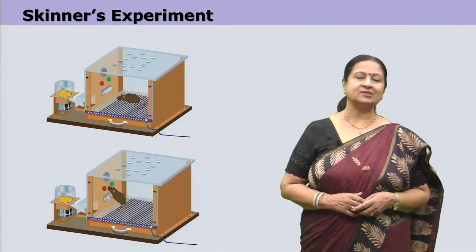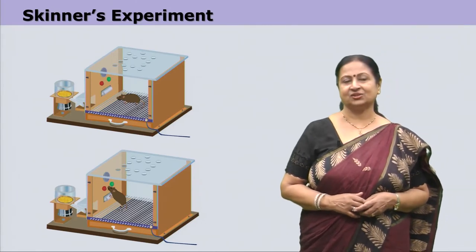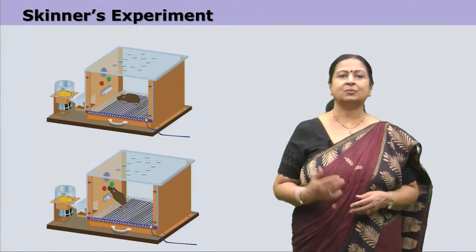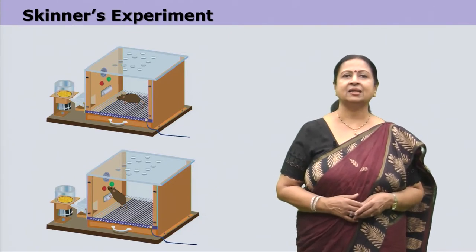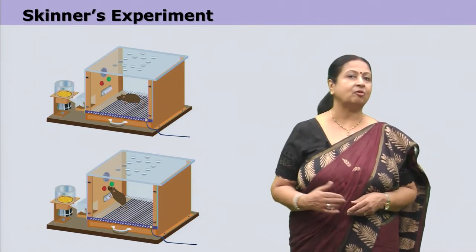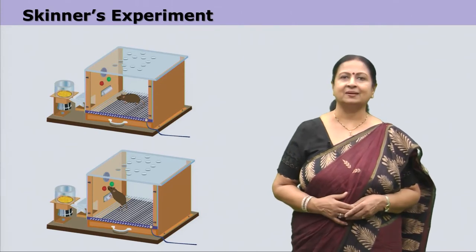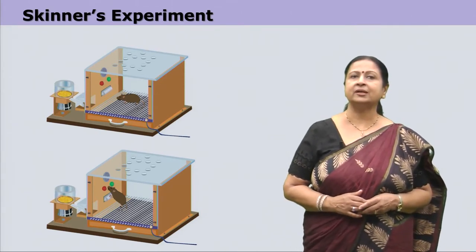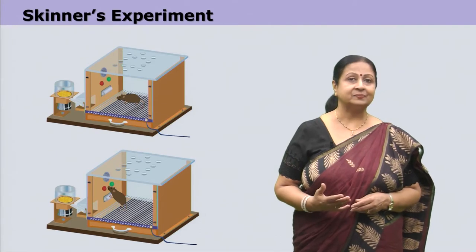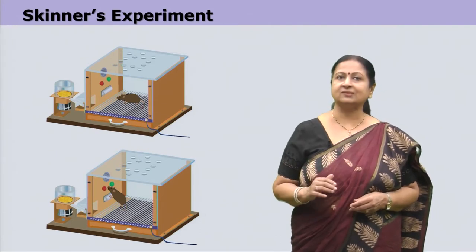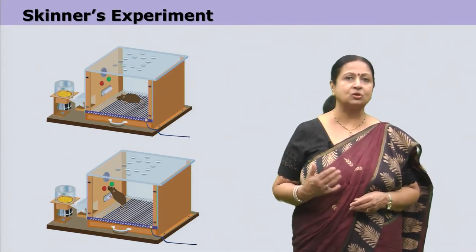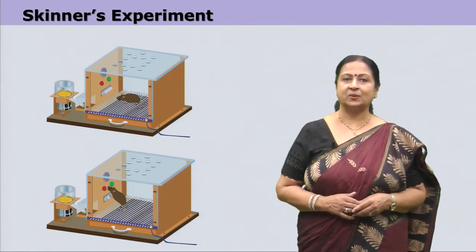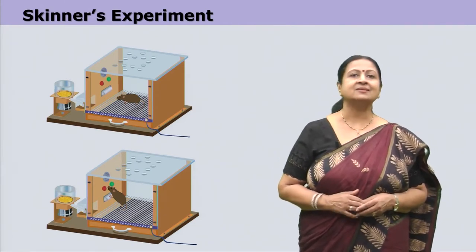This process is called stimulus generalization. The rat believes that if it keeps pressing the bar again and again, the food pellet will keep falling. But this is not what the experimenter wanted from the rat — he wanted the rat to press the lever only when music was also sounded. Let us know more about this experiment in the coming slide.